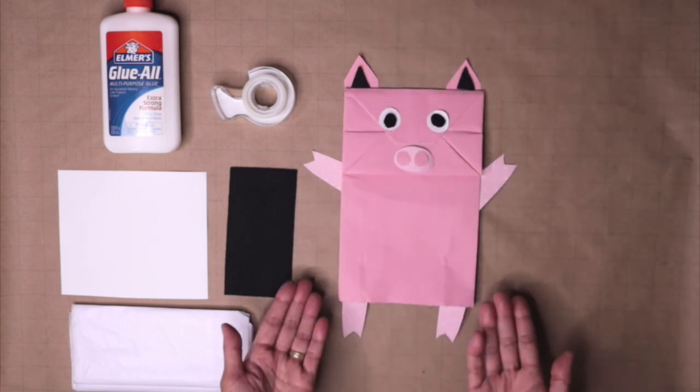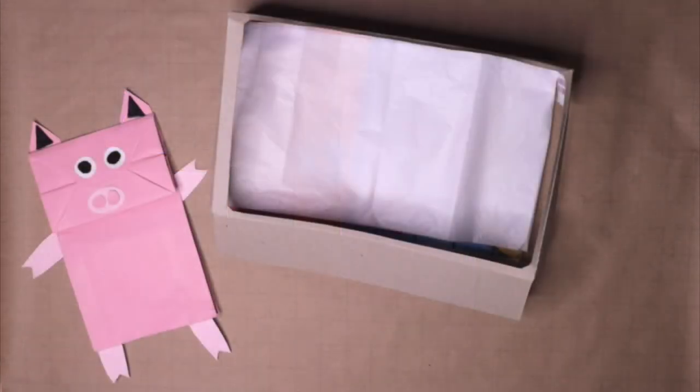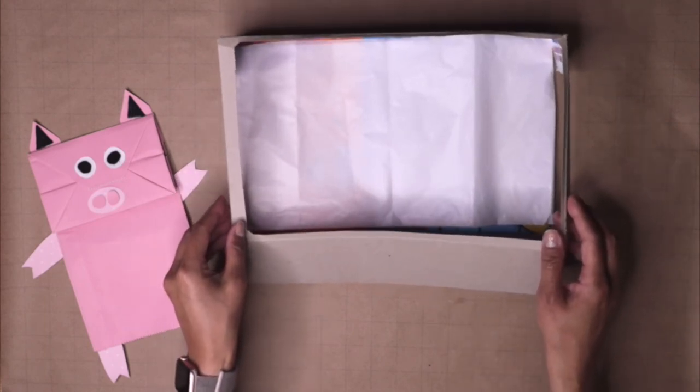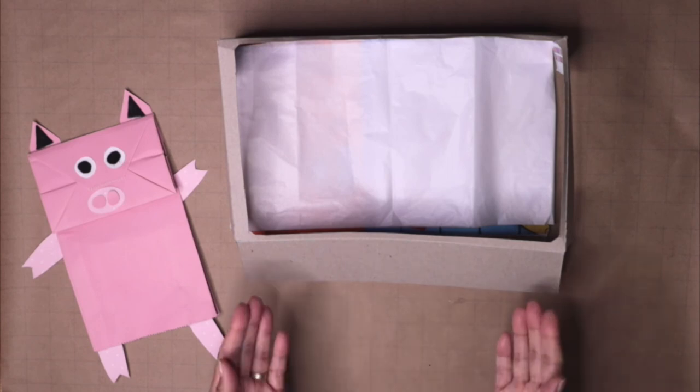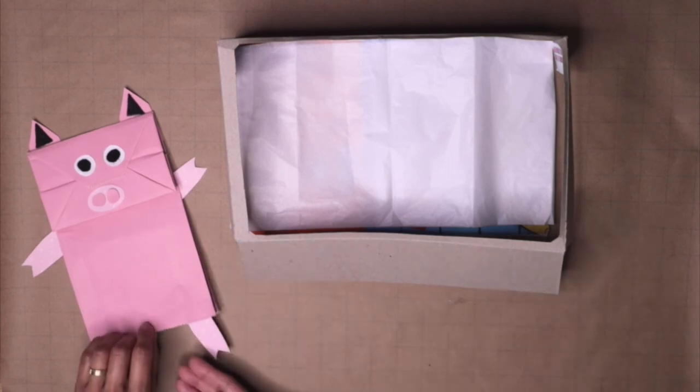There you have it. That is how you make a pink paper bag puppet. If you would like to make a theater, ask the grown up to cut out the center of an old cereal box and tape or glue white paper or gift tissue paper onto the box.